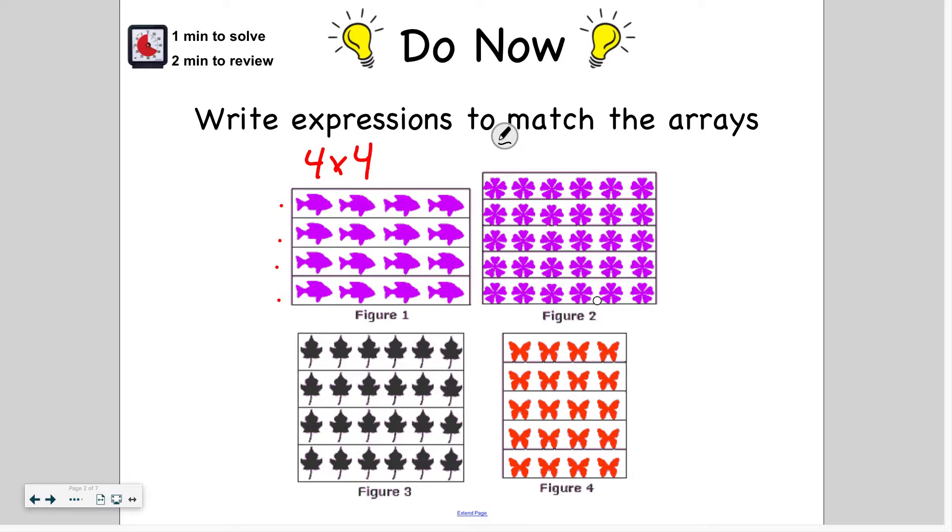For the purple flowers here, there are one, two, three, four, five groups. Five is my first factor. And there are one, two, three, four, five, six in each group. So five times six.